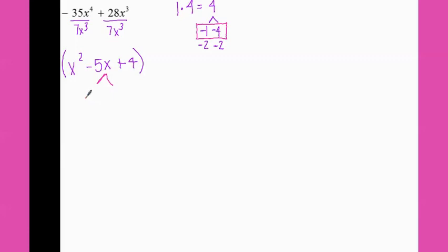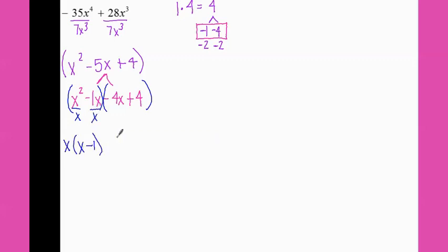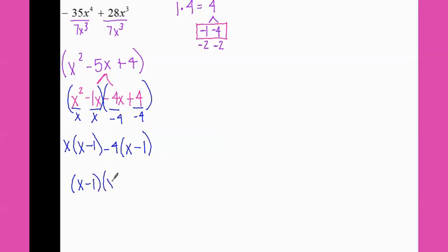So I'm going to split this up into negative one x minus four x. Bring down my x squared and the plus four. Now I can group: group the first two, group the second two. These both have an x, leaving me with x minus one. Anytime the front term is negative, you're almost always going to divide out the negative — so minus four. Negative four times negative four gives positive one x, and four divided by negative four is minus one. These parentheses have to match, so my factors are x minus one and x minus four.